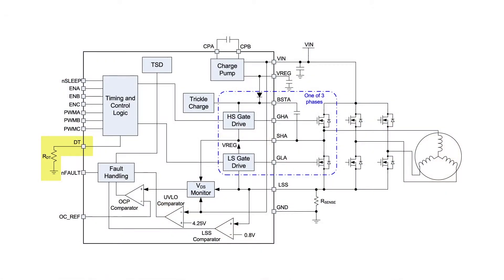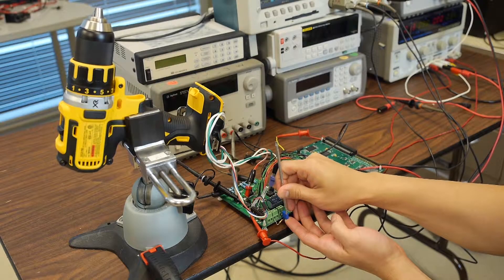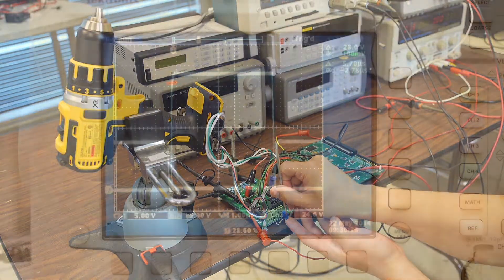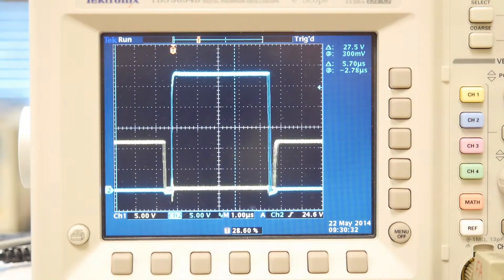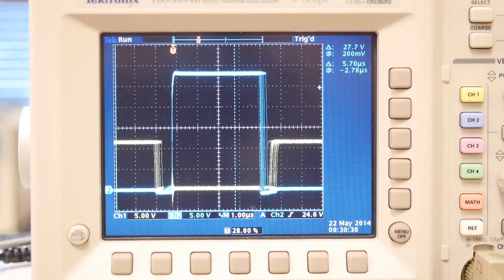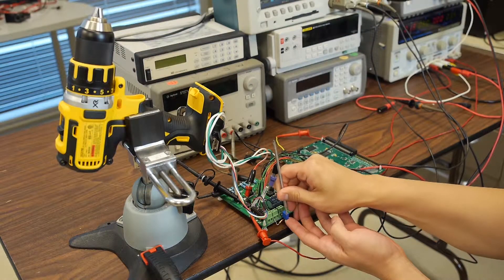The drivers have programmable dead time which is set by an external resistor. The dead time can be set over a very wide range from about 50 nanoseconds up to 5 microseconds. This allows you to optimize the drivers for different power MOSFETs and different PWM frequencies. We can vary the value of this resistor and see that the dead time varies accordingly.